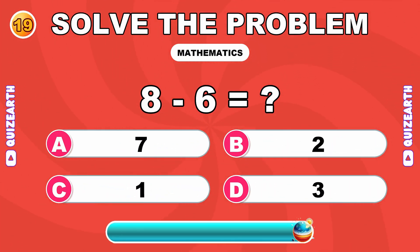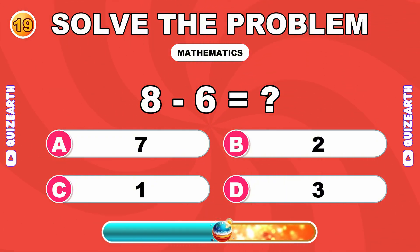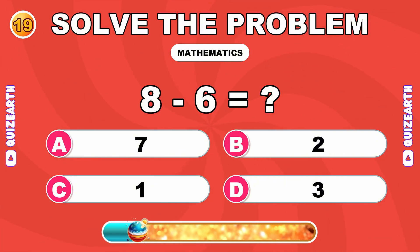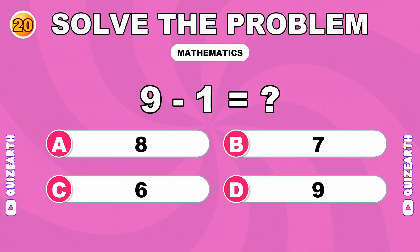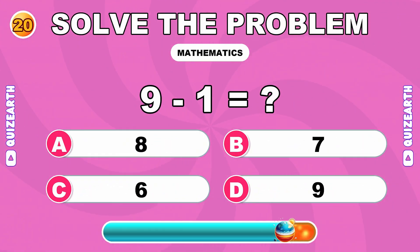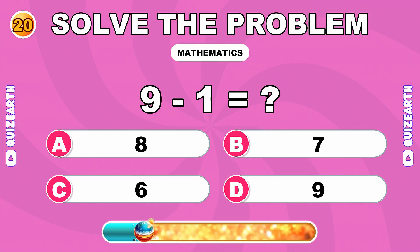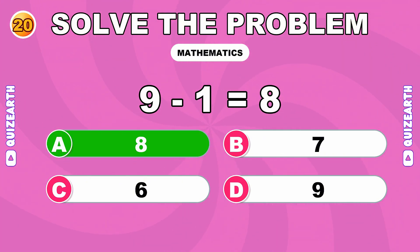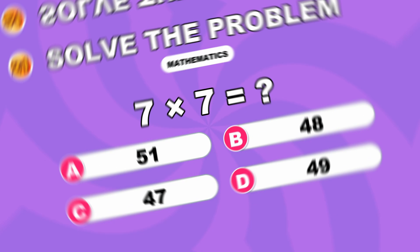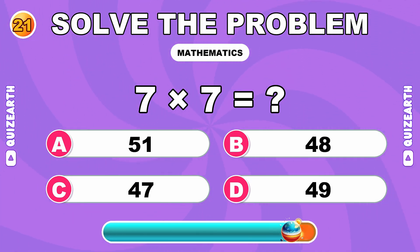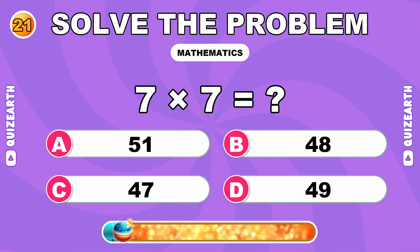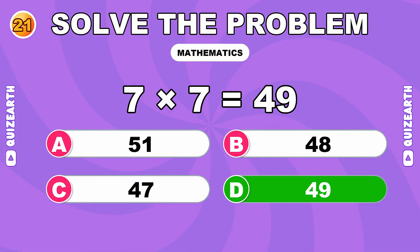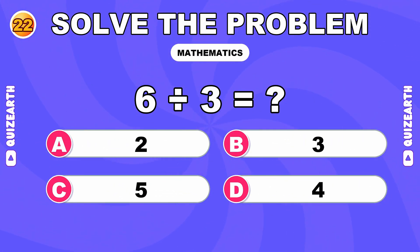What is 8 minus 6? Phenomenal. The answer is 2. How much is 9 minus 1? Absolute mastery. The answer is 8. What do you get when you multiply 7 by 7? Flawless execution. The answer is 49. What is 6 divided by 3? You're dominating. The answer is 2.